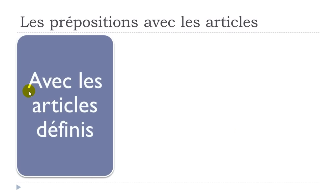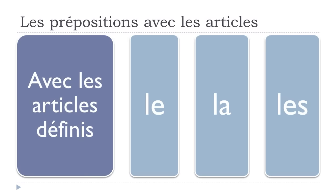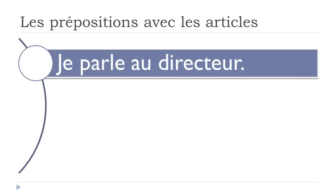Now let's see avec les articles définis. Remember, the definite article translates as 'the' in English, but in French we have the difference between the masculine form le, the feminine form la, and the plural form les. If we keep the same verb parler, you can see it changes a little bit. À plus LE will become AU — you write it A-U and pronounce it 'o.'